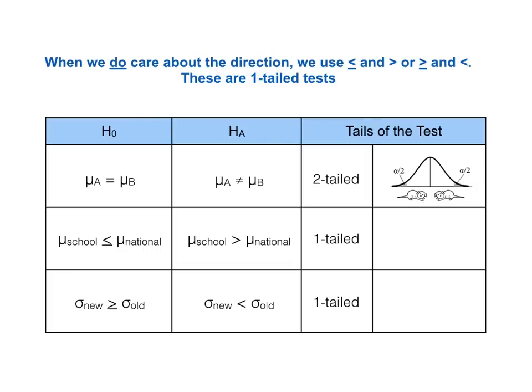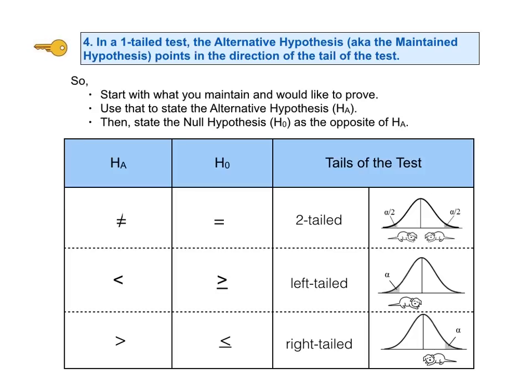KTU number 4 says, in a one-tailed test, the alternative hypothesis, which is also known as the maintained hypothesis, points in the direction of the tail of the test. So we can follow a simple, straightforward approach. We start with what we maintain and would like to prove. We use that to state the alternative hypothesis first, as shown in the first column here. Then we state the opposite as the null hypothesis, as shown in the second column. Note that the shape of the comparison symbol for the alternative hypothesis points in the direction of the tail of the test. The less than symbol points to the left, so that test is left-tailed. The greater than symbol in the bottom row points to the right, so that test is right-tailed.